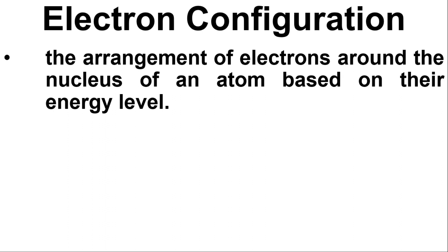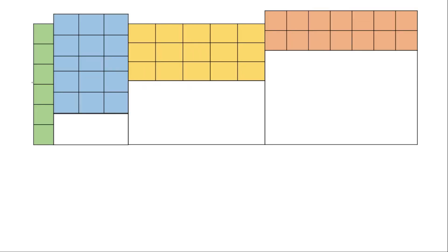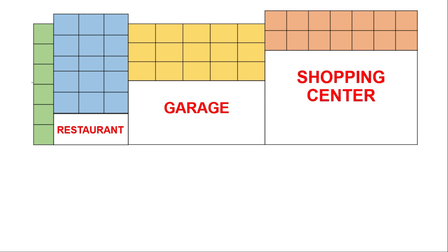We're going to use an analogy to make things easier. Let's say I have a hotel business. I have a restaurant, a garage, and a shopping center. I divided my hotel and colored the sections. The green part is called the S Tower — each floor has one room. The blue P Residences has three rooms per floor. The yellow D Hall always has a floor number of minus one compared to the others, and has five rooms per floor. Lastly, the F Unit has seven rooms per floor.